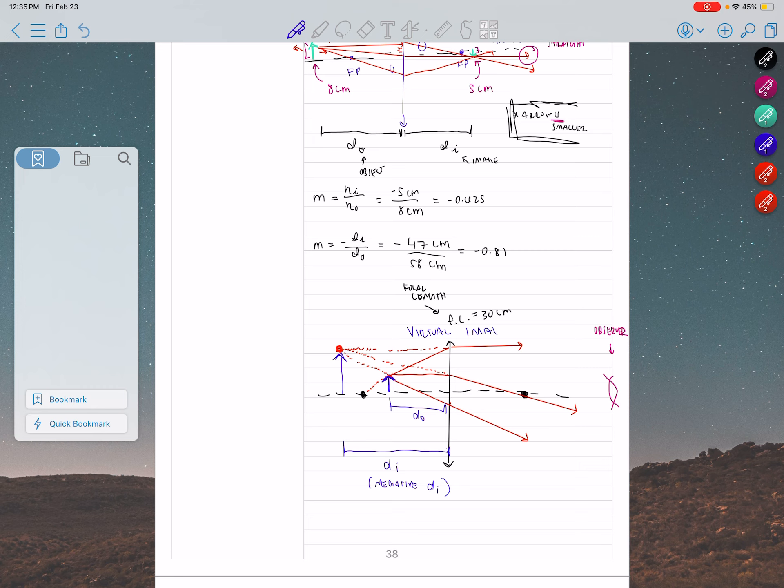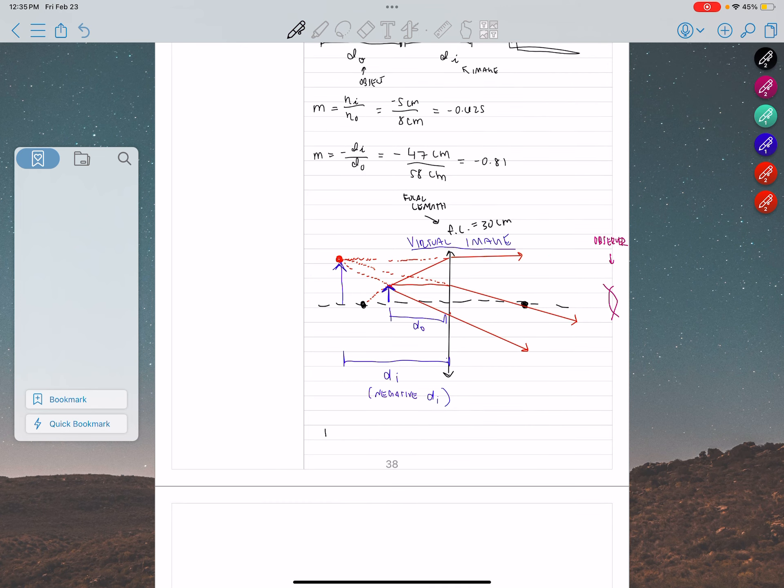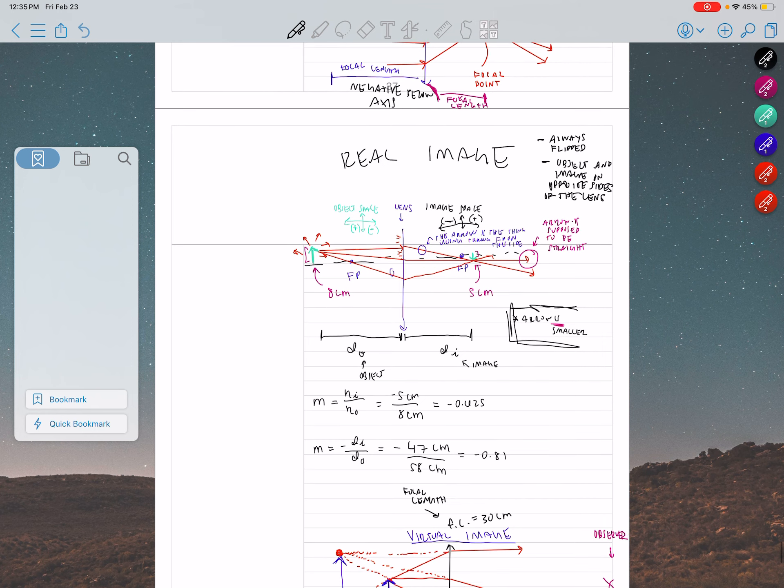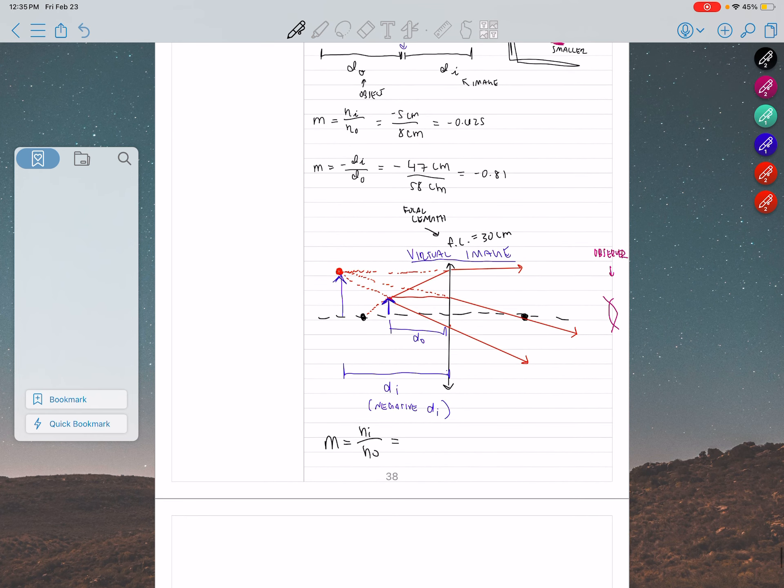I can calculate magnification the same way. I am going to use the same equation. So I can have magnification HI over HO. Now notice that the image and the object have positive height. So this is 10, and this is 25. And this one turned out pretty well.